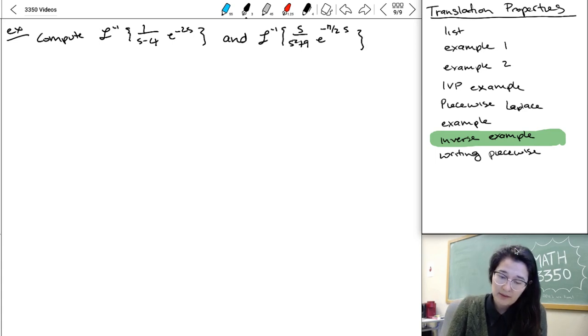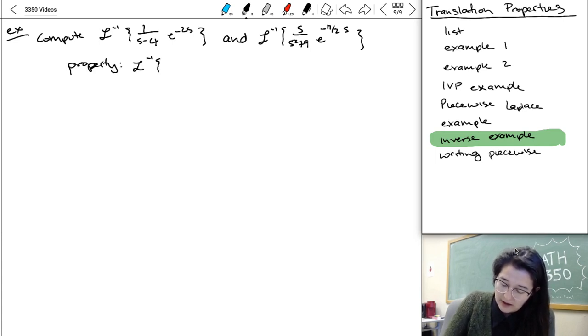And we're gonna be using this property that L inverse of e to minus A S times F of S is equal to F of T minus A U of T minus A.